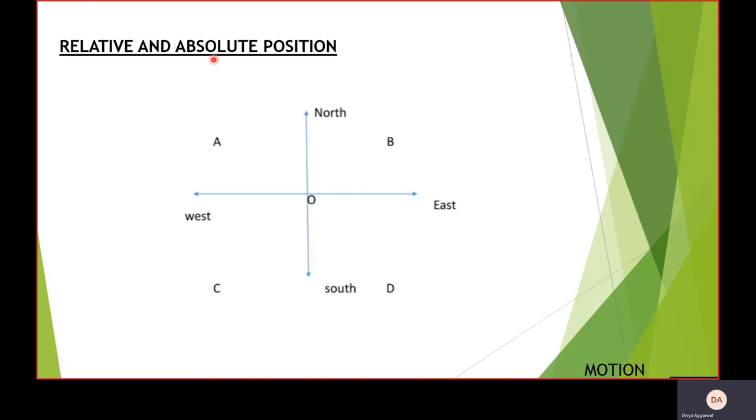But the absolute position on the other hand is the exact location of the point. So on Google Maps, if you have ever tried putting coordinates, you will find that it points to a single position. That is its absolute position.